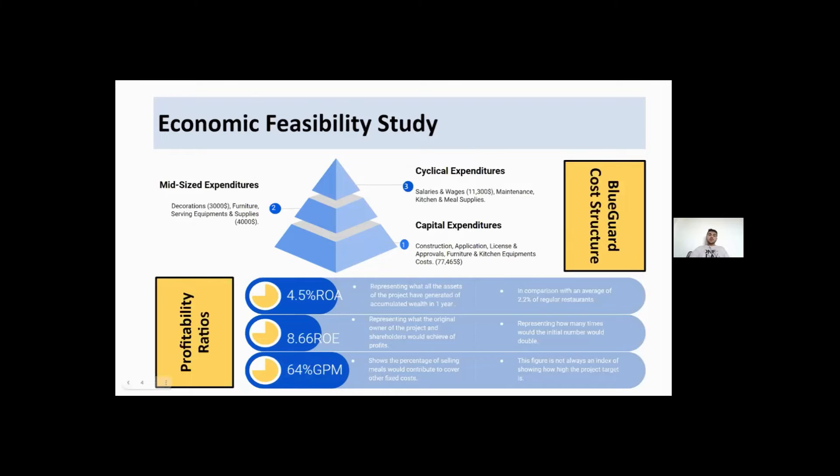The other segment of the economic feasibility study is the profitability issues. Here we can see a 4.5% return on asset representing what all the assets of the project have generated of accumulated wealth in term of one year. In comparison with an average of 2.2% of regular restaurants. As you can see here, 8.66% return on equity. You can notice that it is almost the double or less the double of return on asset because by nature, equity stands for less than the asset.